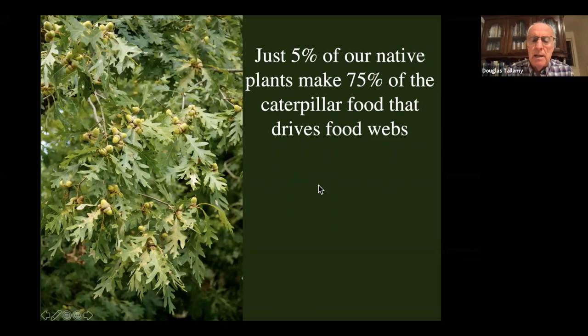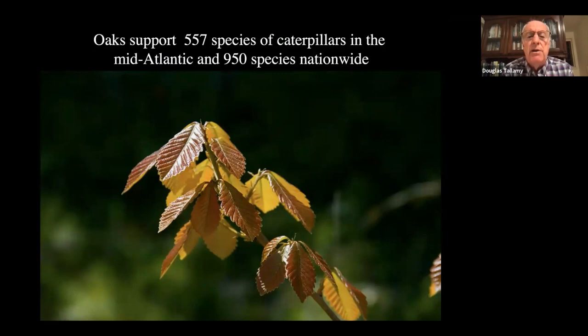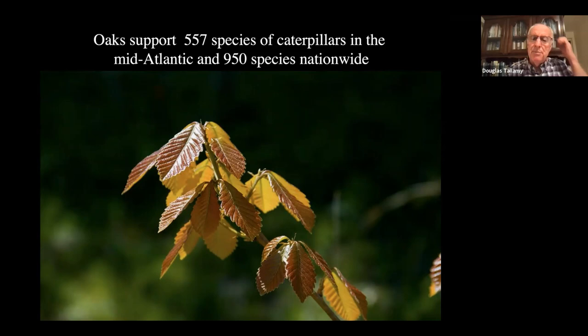Oaks in the mid-Atlantic states support 557 species of caterpillars — that includes New York — and over 950 species nationwide. There's no other plant genus that comes close. In 84% of the counties in which they occur, oaks are the number one keystone plant — the most valuable plant you can put into your landscape.